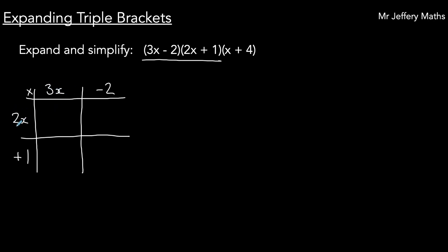So I'm going to multiply 2x by 3x for 6x squared, 2x multiplied by negative 2 for minus 4x, 1 multiplied by 3x for 3x, and then 1 multiplied by negative 2 for negative 2.